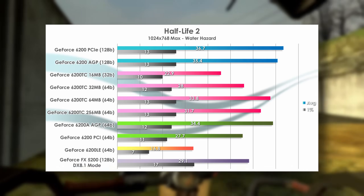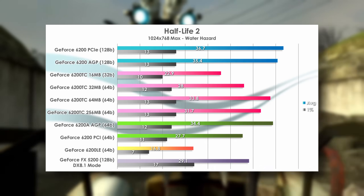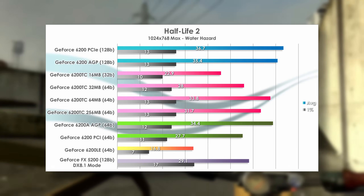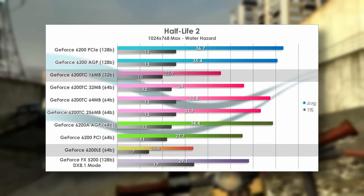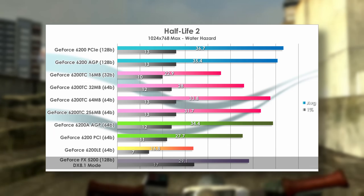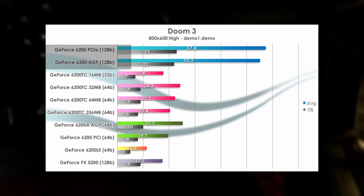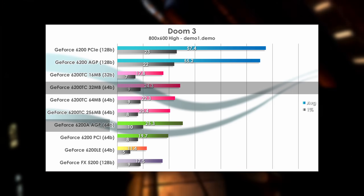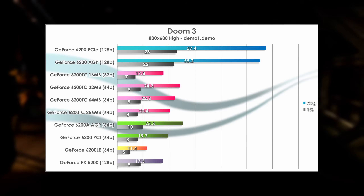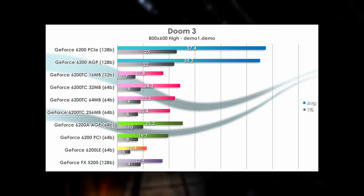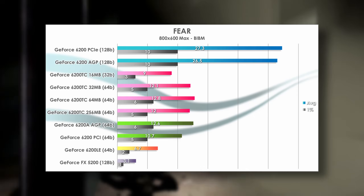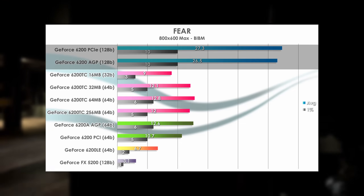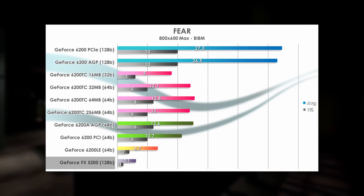Half-Life 2 on the Water Hazard level puts even the fastest 6200 variants at a barely playable frame rate. Bandwidth matters little here, as the Turbo Cache cards compete near the top, with the 64MB variant edging close to the 128-bit cards. The slowest is the 6200 LE, and the 5200 does alright, though it's not running in DirectX 9 mode. Doom 3 puts a huge emphasis on memory speed — the 128-bit cards are so far ahead they don't even look like they're in the same series. Unless you're using a 128-bit card, everything else is pretty much garbage in this game. Then FEAR, maxed out at 800x600: the results were predictably horrible. The 128-bit cards almost hit 30fps but didn't, and the rest turned into a slideshow, with the FX 5200 practically standing still.